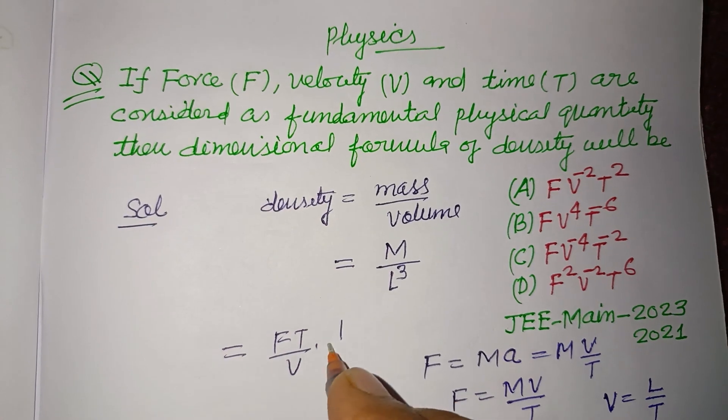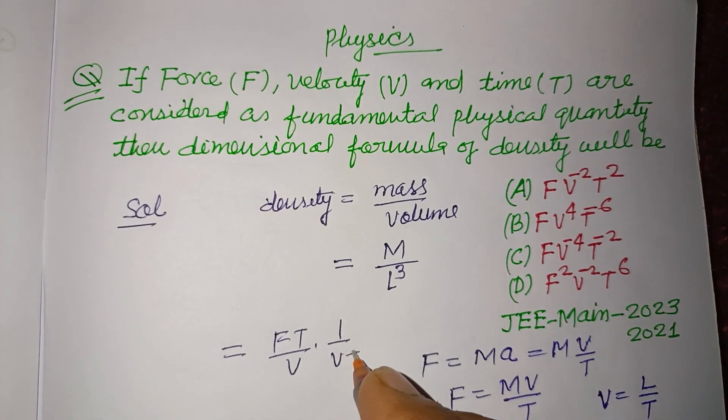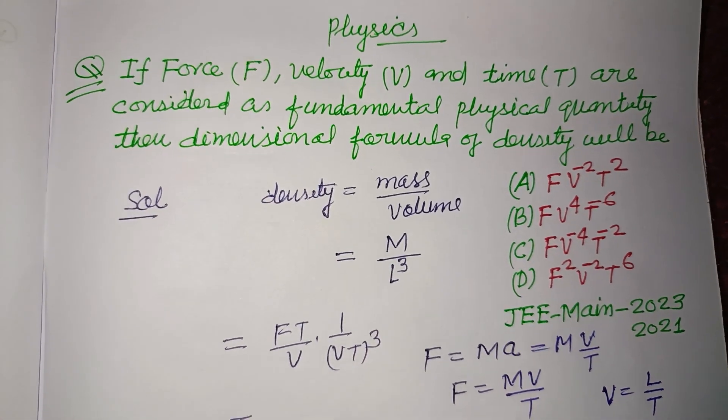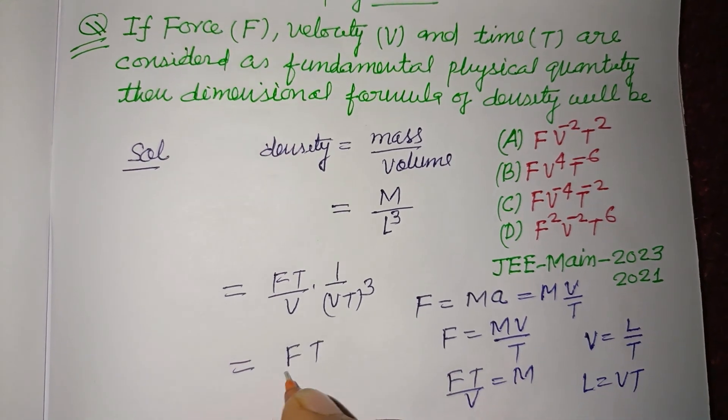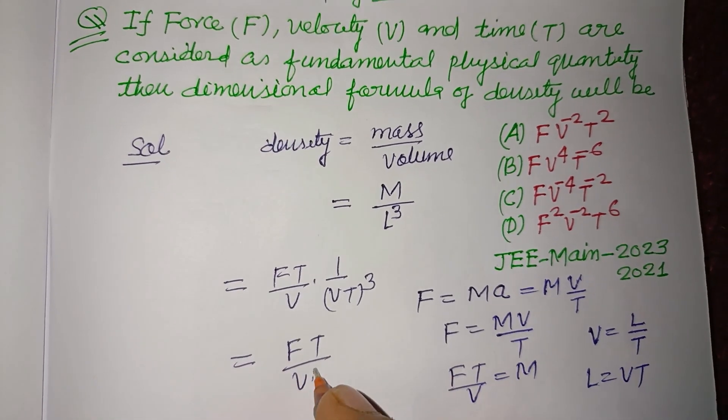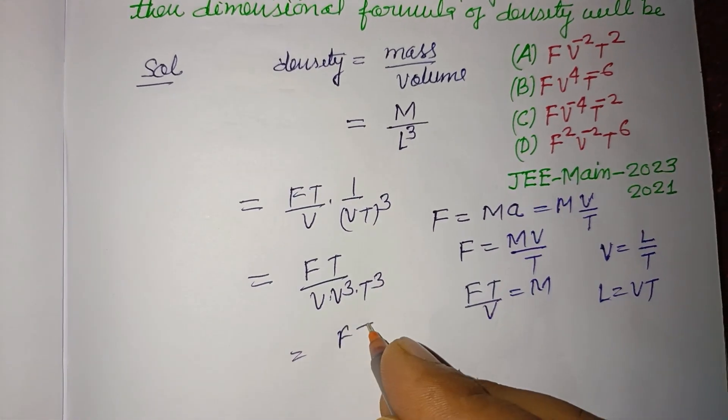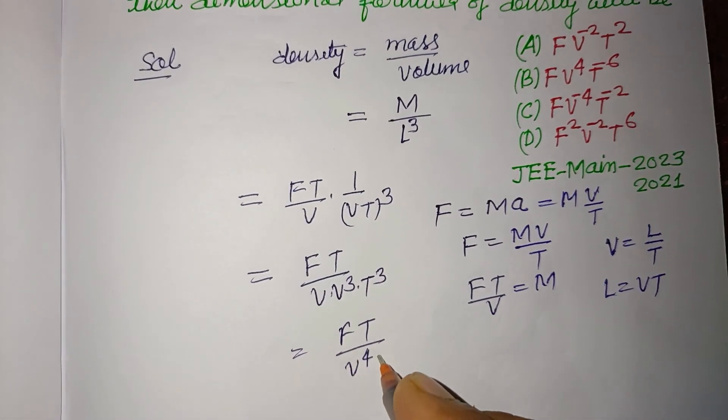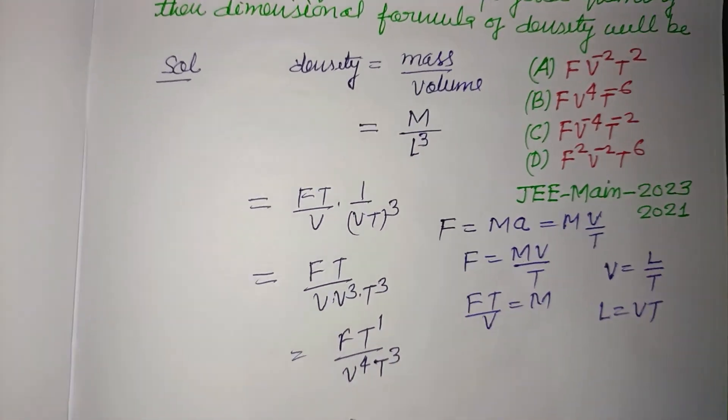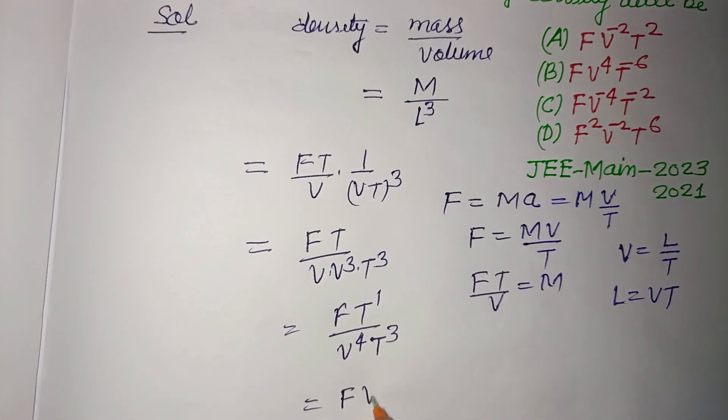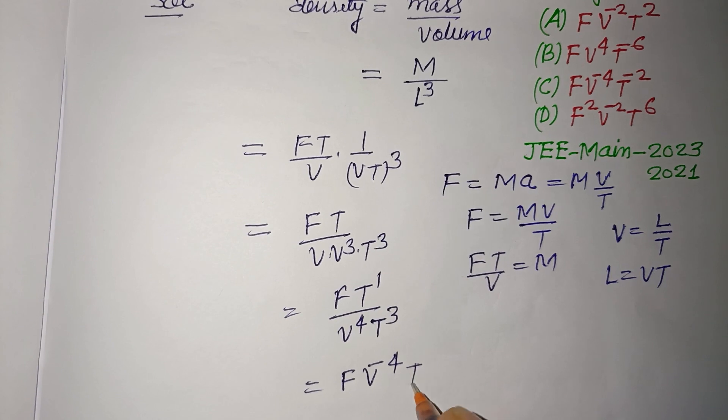So this is FT over V times 1 over V³T³, which equals FT over V⁴T³. This simplifies to T to the power 1 minus 3, giving us F V⁻⁴ T⁻².